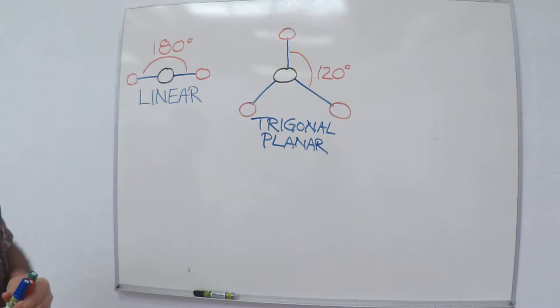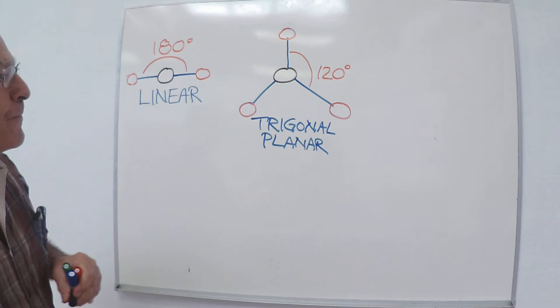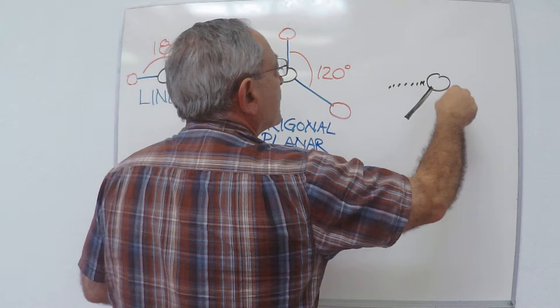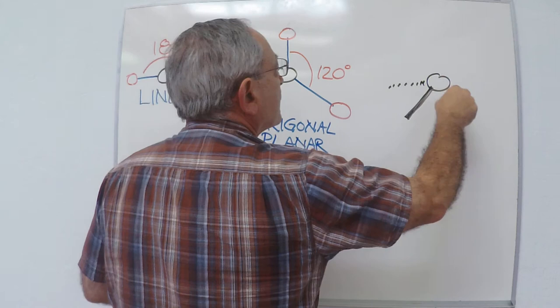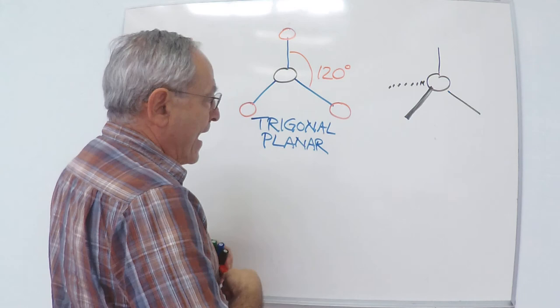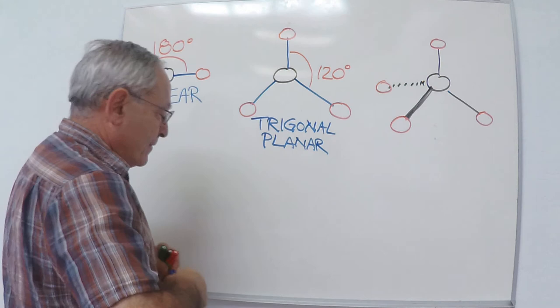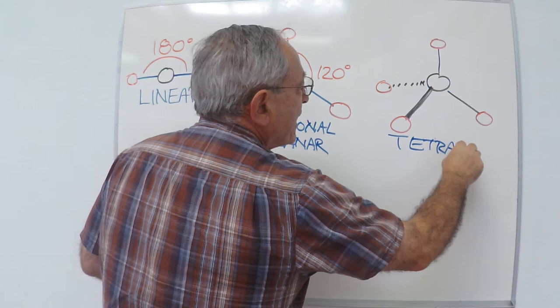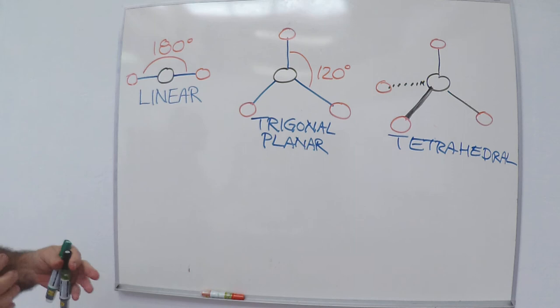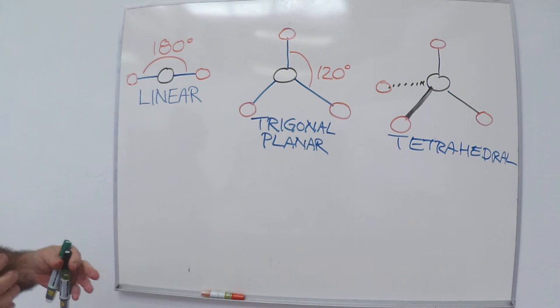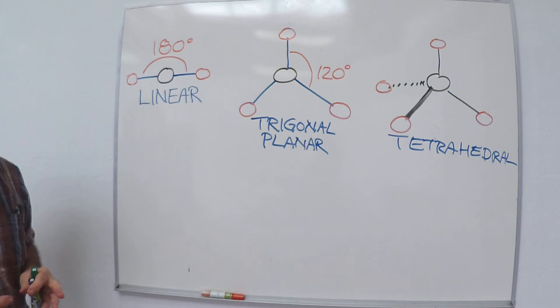Now, we've already talked about the four group scenario. As a reminder, the wedge is coming out at you, the dash is going away from you behind the plane of the board, and the ordinary lines are in the plane of the board. This arrangement, again, that we've already looked at, is called tetrahedral. Now, one of the things we talked a lot about was something called the octet rule, that atoms starting with boron, when they make bonds to other atoms, want to be in contact with eight electrons in their outer shell, either by sharing or having lone pairs or a combination of both.